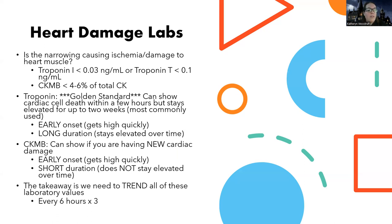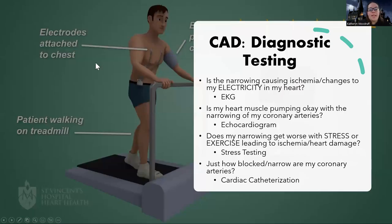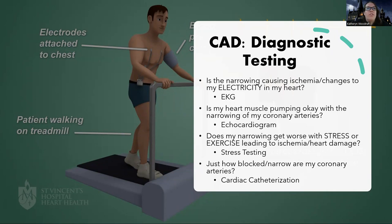Troponin really is your golden standard above everything else. There's also diagnostic testing to look for narrowing causing ischemia or changes to the electricity in the heart. A lot of dysrhythmias are caused by lack of oxygen or issues where the heart's not functioning right. If my heart is not getting good blood flow, how is the electrical system supposed to work? Everything has to live off of oxygen. If I'm low on oxygen, my electrical system gets really irritable, which can lead to dysrhythmias.